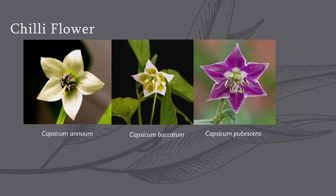Now let us see the flowers of chilli. Here I have taken three different species. The first one is Capsicum annuum. Let us try to divide this flower into two equal parts by passing a plane through the center of the flower. You can see I have got two full petals and one half petal on the left hand side, and again two full petals and one half petal on the right hand side — two equal parts.